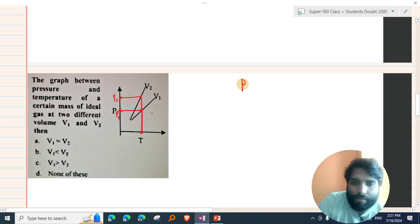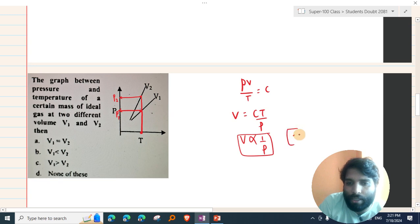The graph will be constant. For volume 1, the value is constant. For volume 1, the slope is at T1.